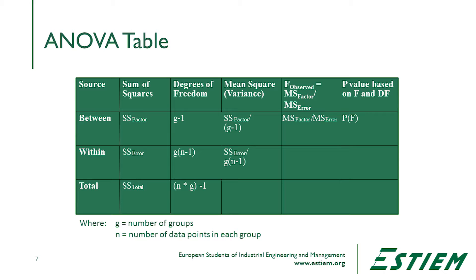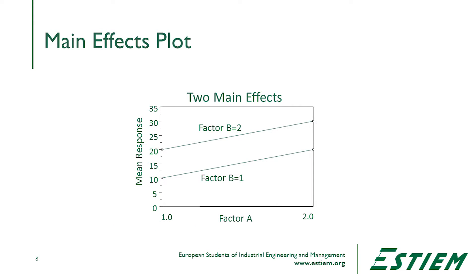We can interpret this data graphically in a number of ways. In this next slide, I have two factors A and B at two different levels, arbitrarily called 1 and 2 for each. As factor A increases from 1 to 2 and factor B goes across those levels, we see it's increasing on the same slope of line. When factor B equals 2, there is a higher level of performance, but it follows the same slope — this is what we call a main effects plot, showing the relationship of the Y variable to A and B as they change together.